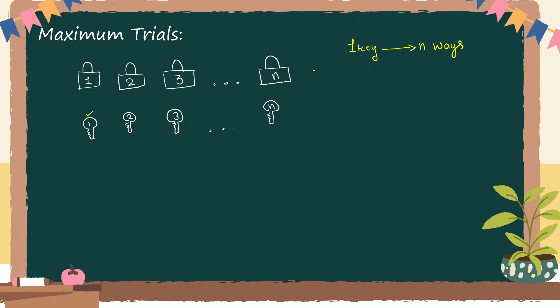After I am done with the first key, I will go for the second key. For example, if the first key is for the second lock, I am done with that. Now the second key has n locks to try, but we need to think about the worst possible case — so the second key can be tried in n minus one locks, giving n minus one ways.